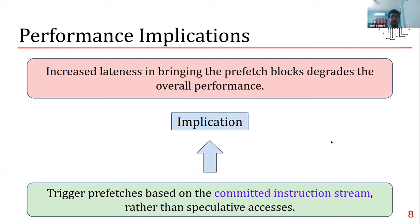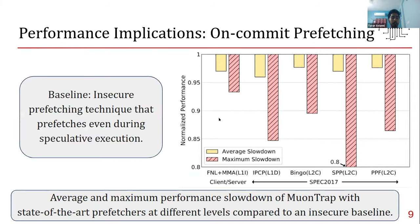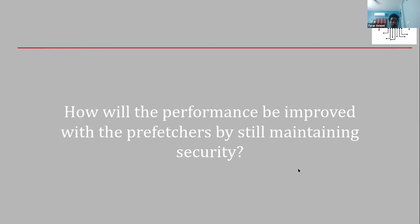The problem with hardware prefetchers is that speculative memory accesses invoke prefetchers at different cache hierarchy levels, indirectly triggering changes in the non-speculative cache state. MuonTrap's fix is to trigger prefetches only from the committed instruction stream, not speculative accesses — but this increases prefetch lateness and degrades performance. A plot shows average and maximum performance slowdown with MuonTrap using state-of-the-art prefetchers (FNL+MMA at L1I, IPCP at L1D, Bingo/SPP/PPF at L2C) compared to an insecure baseline.